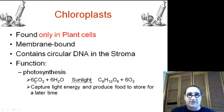So we take our carbon dioxide, and we take our water, and our sunlight, and we create C6H12O6, which is glucose, and oxygen. Again, we capture light energy and produce food so that the plants can store it for later use.